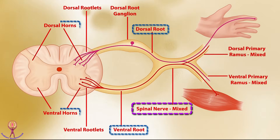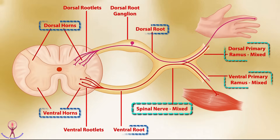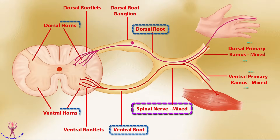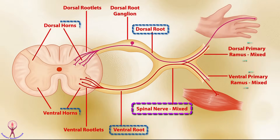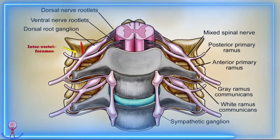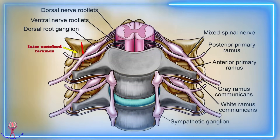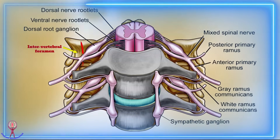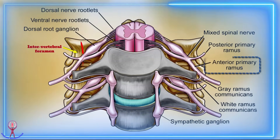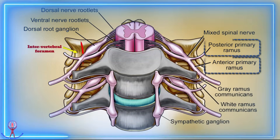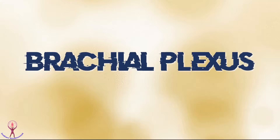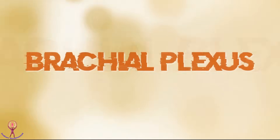Following the intervertebral foramen, each spinal nerve splits into anterior and posterior primary ramus or rami. The anterior and posterior primary rami serve the skin, muscles, and deeper structures of the body. This illustration aims to discuss the emergence of spinal nerves and their formation from the spinal cord, depicting the mid-thoracic segments in conjunction with the vertebral column. With this brief introduction about spinal nerve formation, let us discuss the brachial plexus.